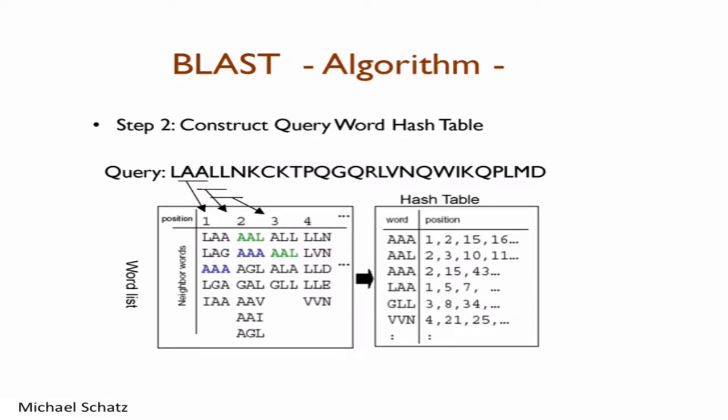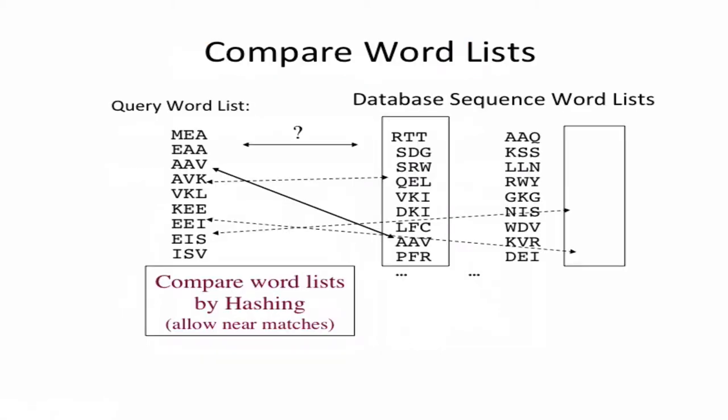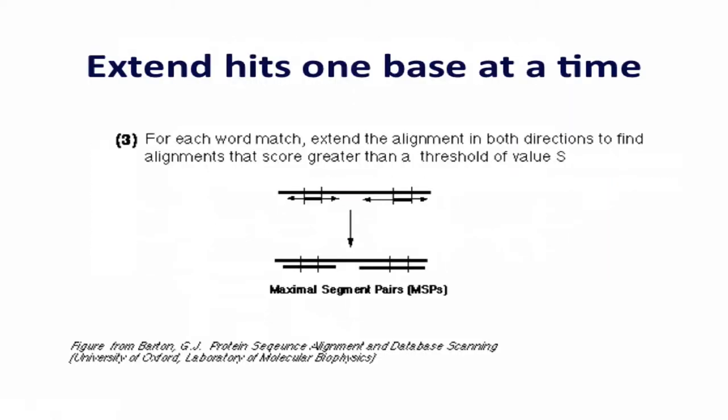You make a hash table of the query words, like creating a dictionary, then match that hash table to one pre-computed for a database sequence. When you find matches, you try to extend them one letter at a time between the two sequences. Every letter you add that is matching or has a positive BLOSUM score — meaning evolutionarily similar amino acids — increases the score.